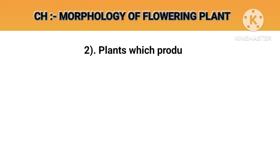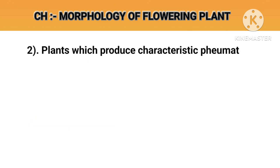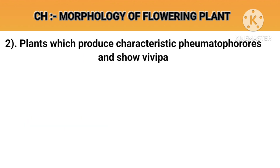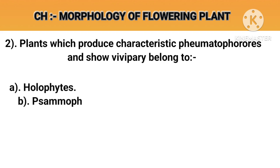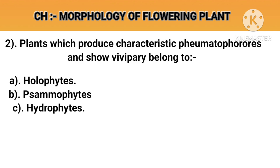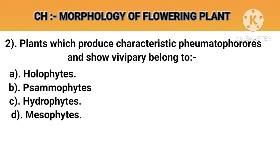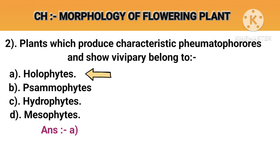Question number 2. Plants which produce characteristics pneumatophores and show vivipary belong to. Option A: Halophyte. Option B: Samophytes. Option C: Hydrophytes. Option D: Messophytes. Answer A: Halophytes.